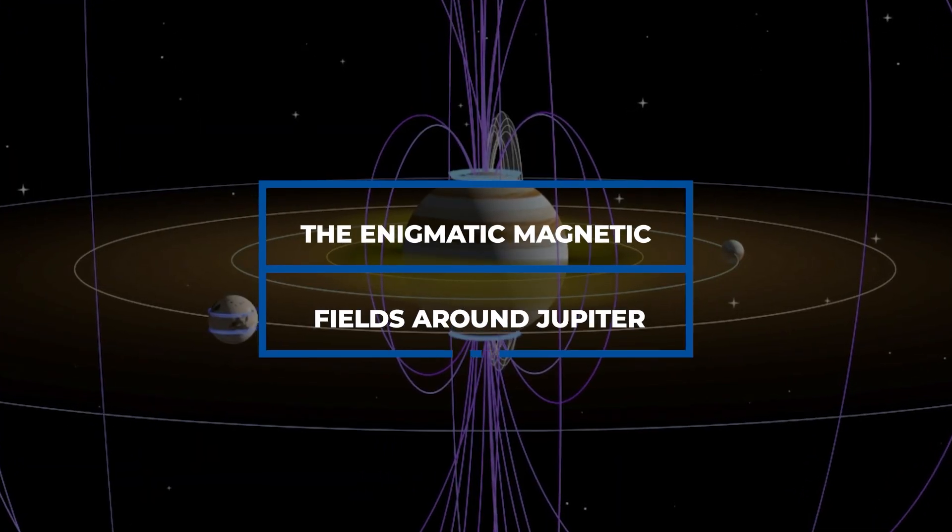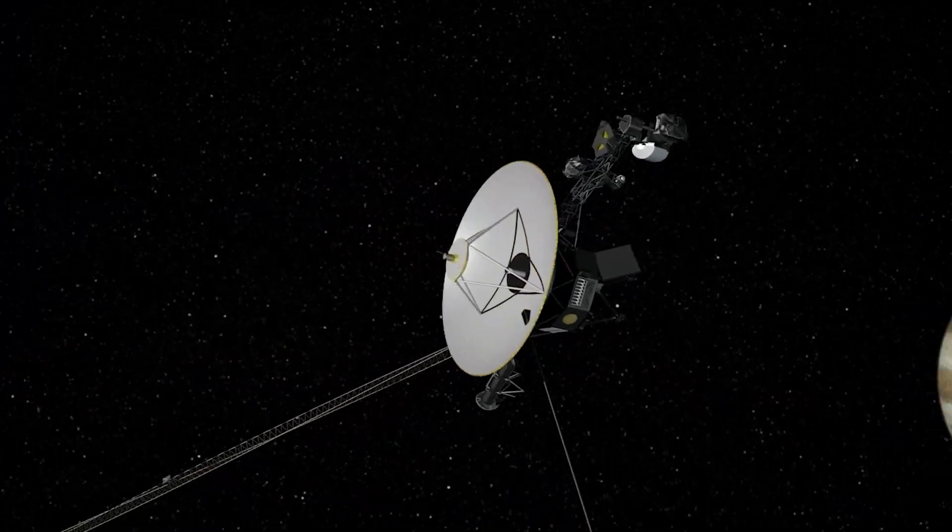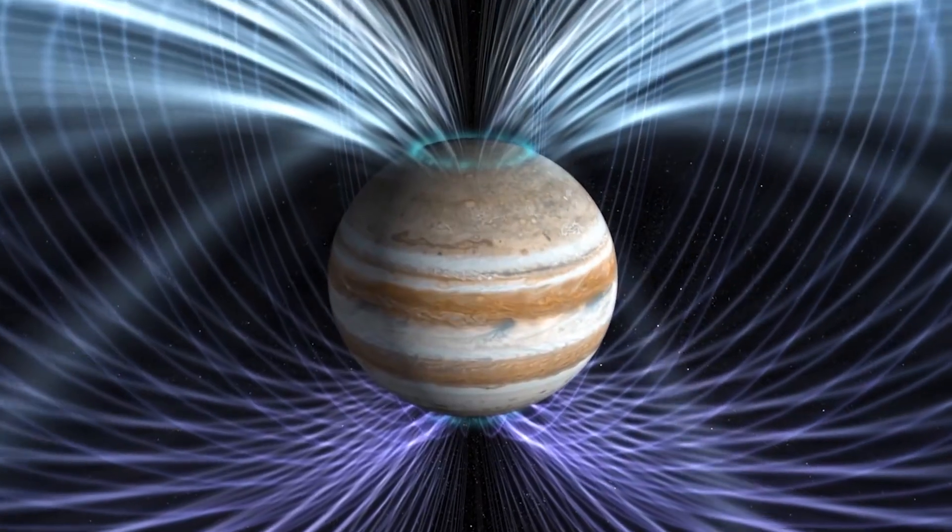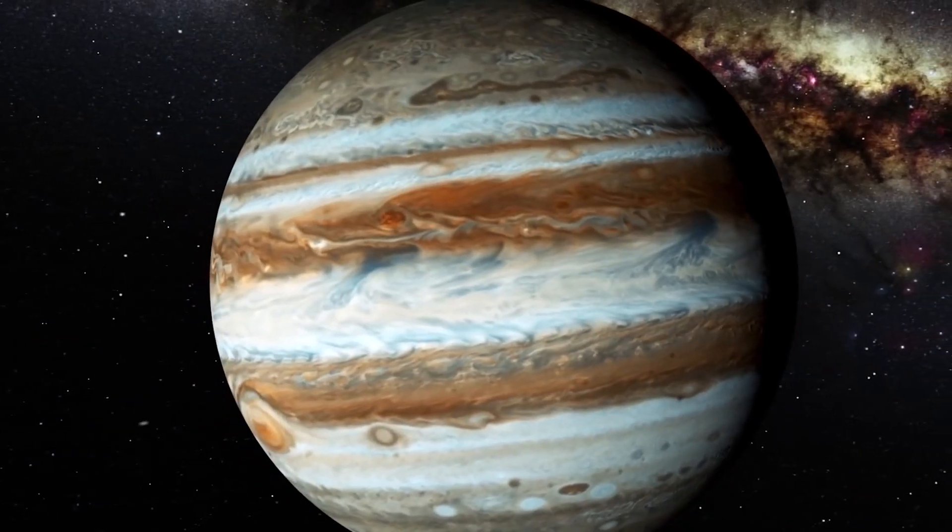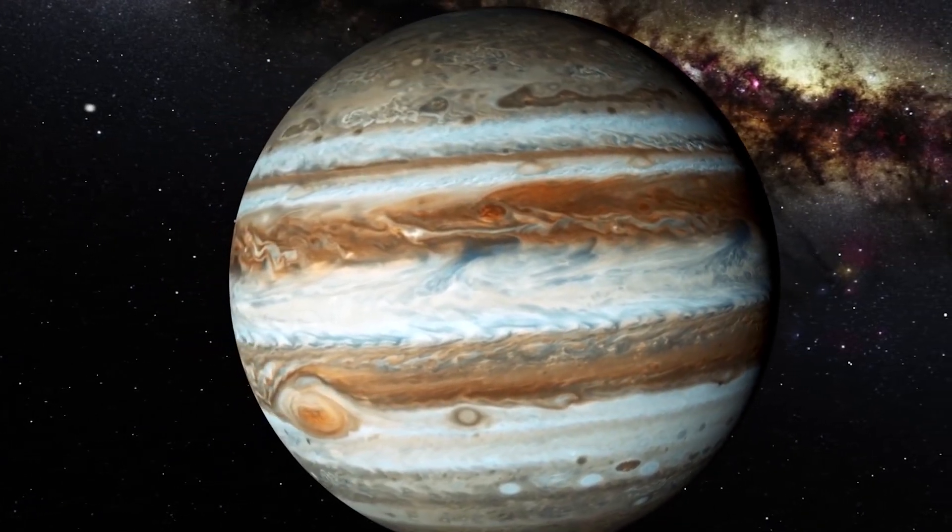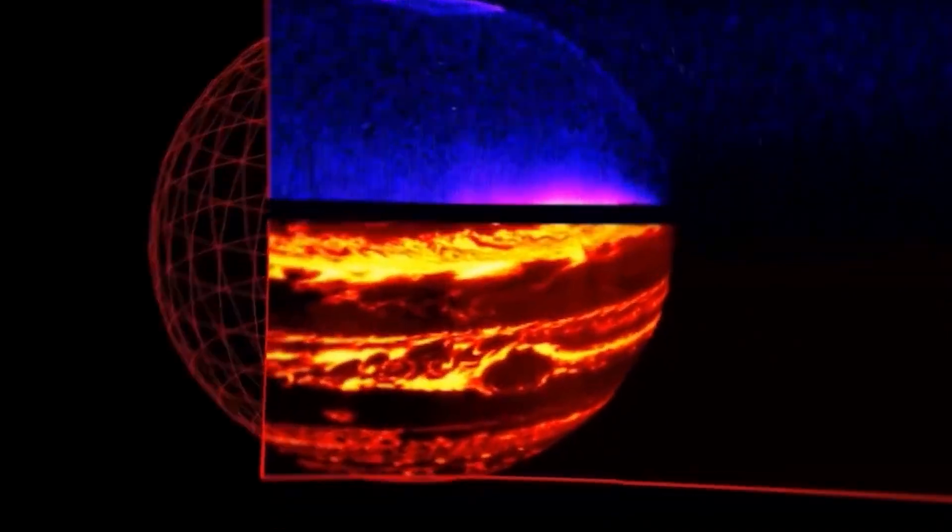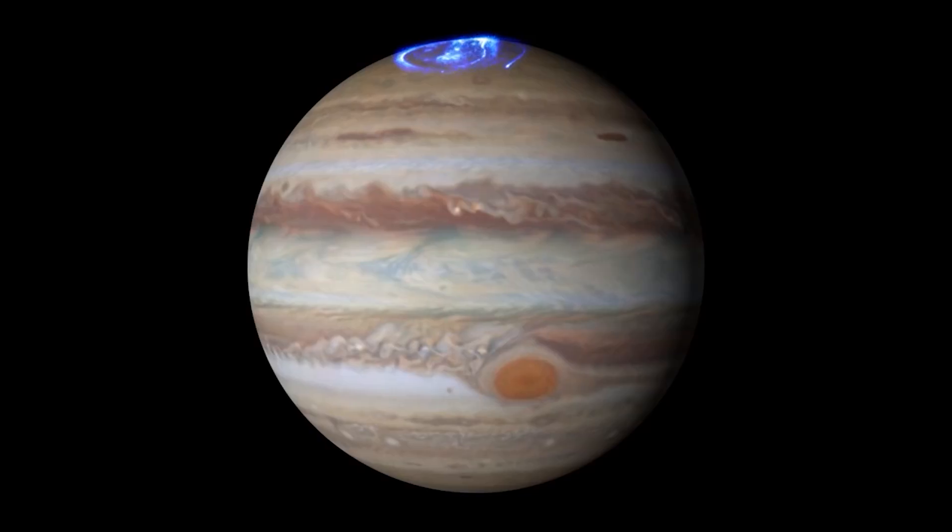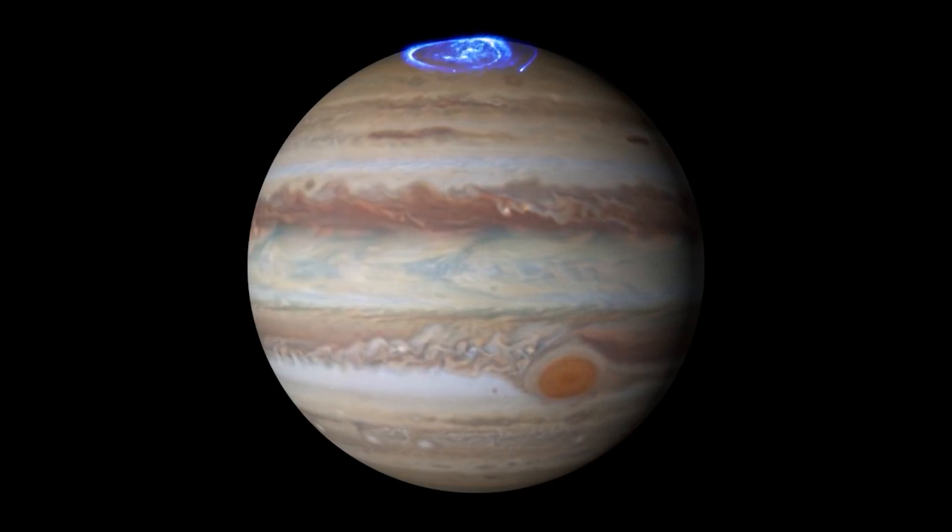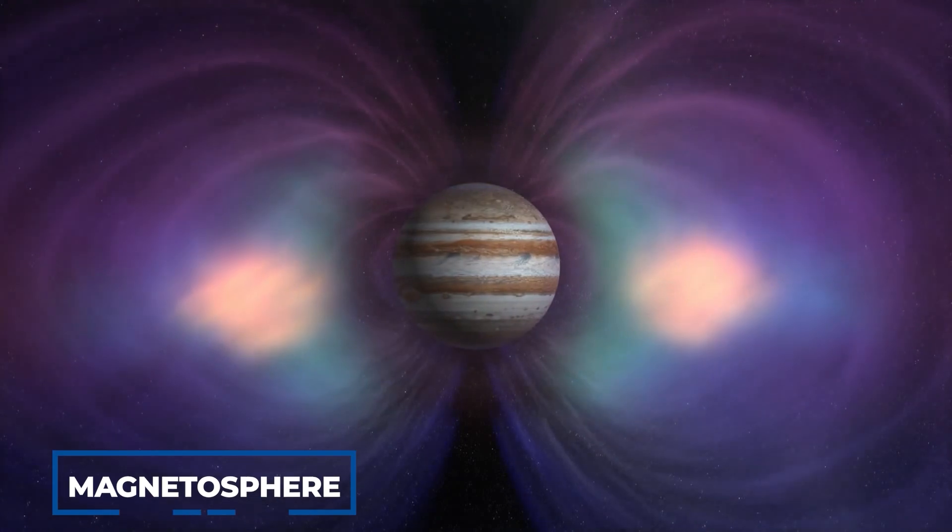Number three, the enigmatic magnetic fields around Jupiter. The encounter of the Voyager probe with Jupiter provided a wealth of knowledge about the gas giant's magnetic fields, leaving scientists astounded and reshaping our understanding of this massive planet. The gathered data revealed that Jupiter possesses one of the most intricate and potent magnetic fields within our solar system. These magnetic fields generate dazzling auroras and play a pivotal role in shaping Jupiter's magnetosphere.